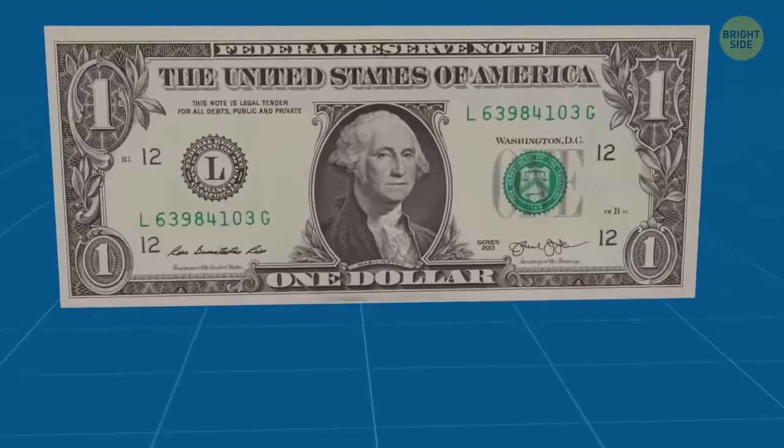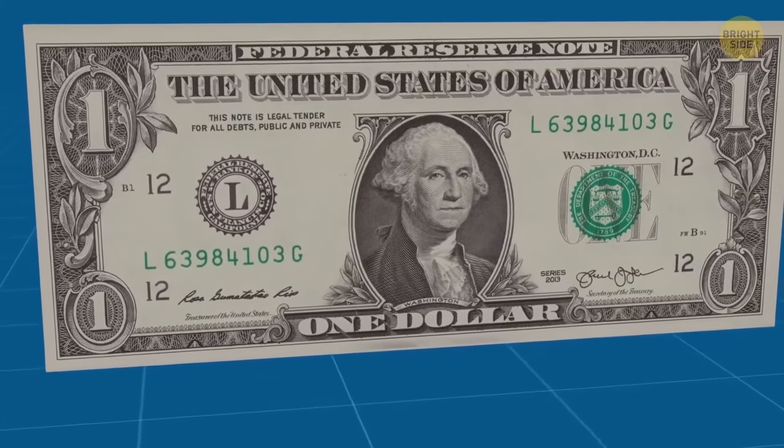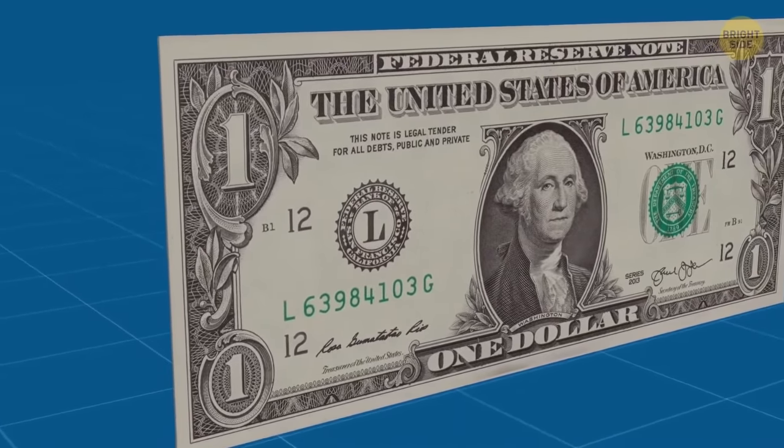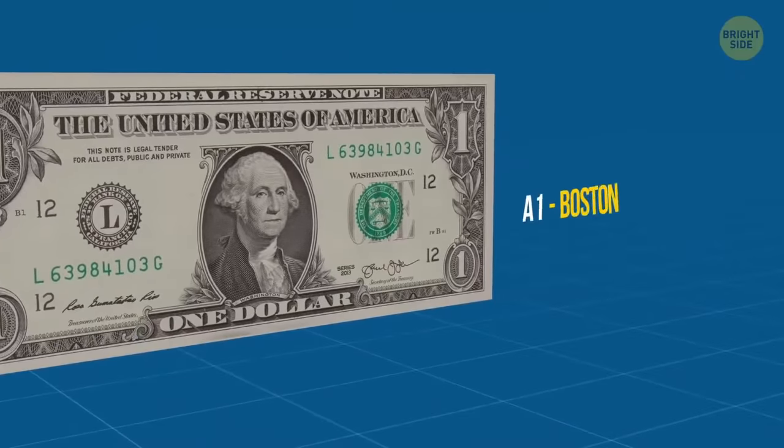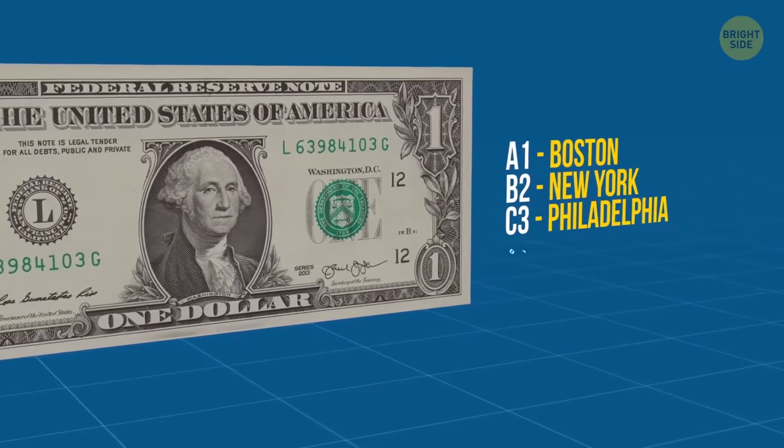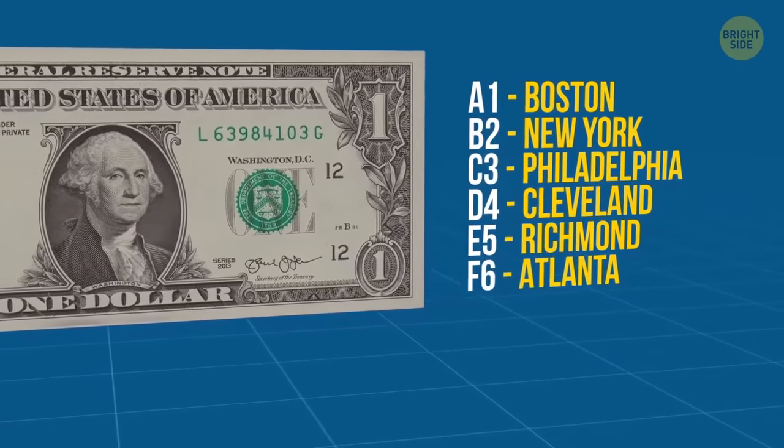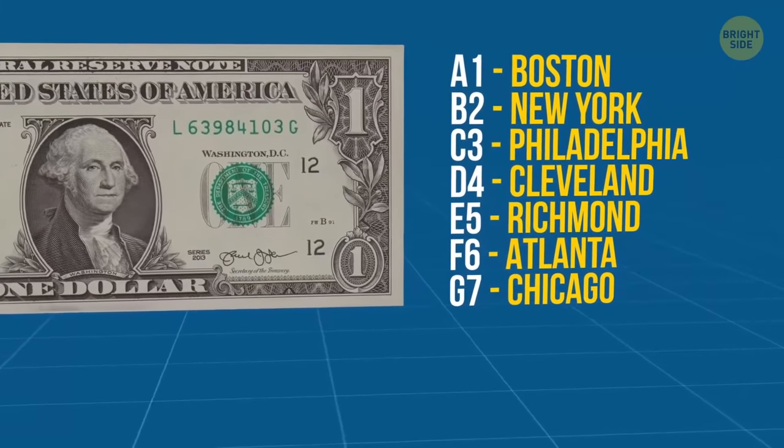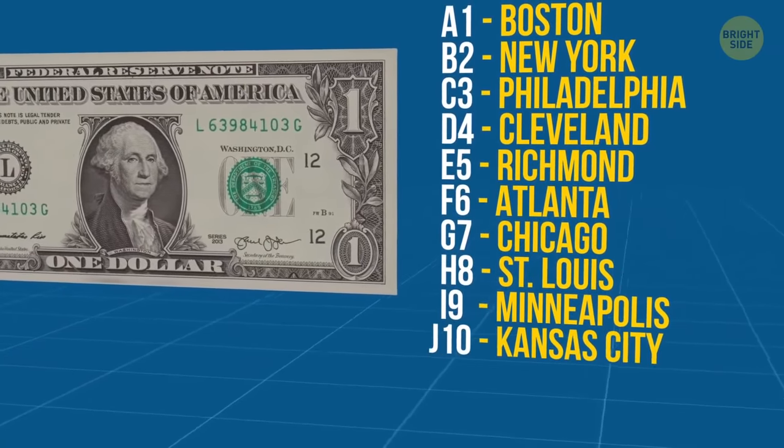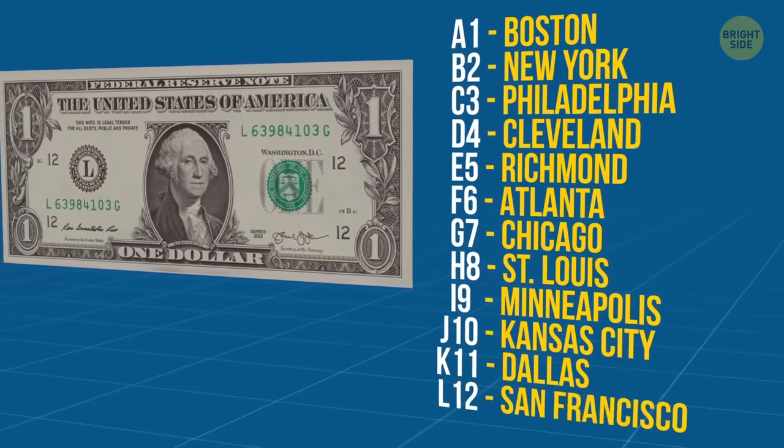A dollar has its secrets, too. A large letter with a rim shows which bank is responsible for issuing this bill. Twelve different Federal Reserve banks print all the money. So if you want to know where your money comes from, just look for these small codes. A-1, Boston. B-2, New York. C-3, Philadelphia. D-4, Cleveland. E-5, Richmond. F-6, Atlanta. G-7, Chicago. H-8, St. Louis. I-9, Minneapolis. J-10, Kansas City. K-11, Dallas. 11-12, San Francisco.